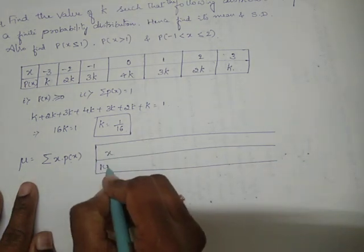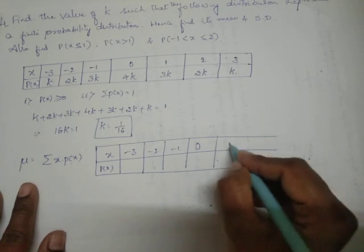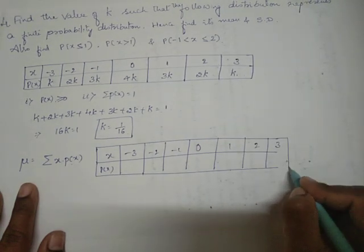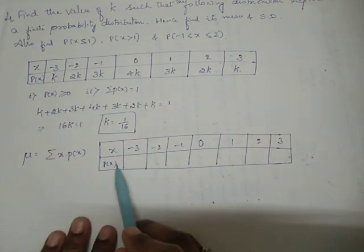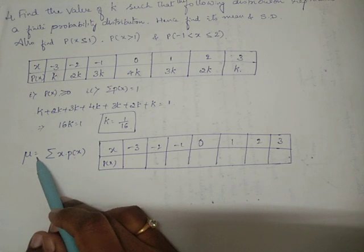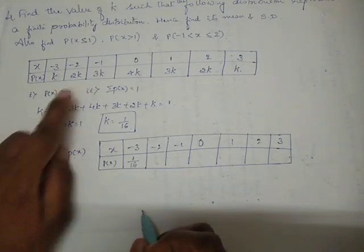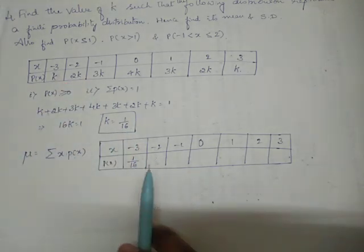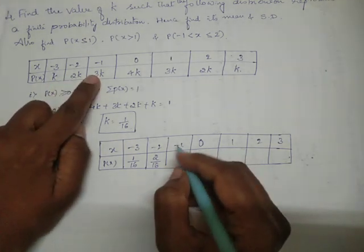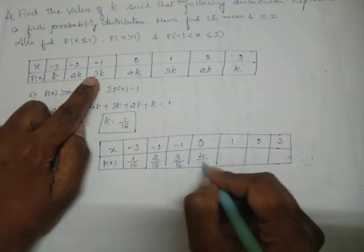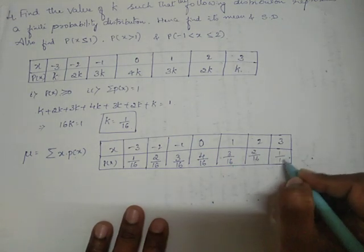In the table, x takes values −3, −2, −1, 0, 1, 2, 3. Substituting k = 1/16: 1k = 1/16, 2k = 2/16, 3k = 3/16, 4k = 4/16, then 3k = 3/16, 2k = 2/16, and 1k = 1/16.